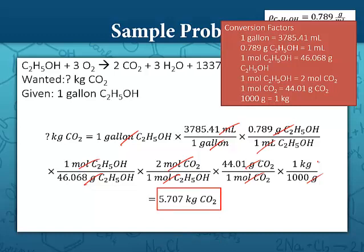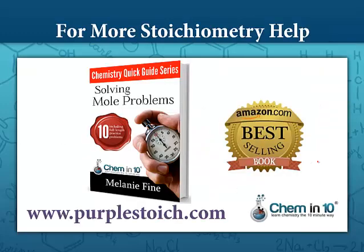I kept the answer in four significant figures because energy was given in four sig figs. There's an argument that the density having three sig figs would give 5.71 kilograms, but I'm keeping it as is. I hope this video was helpful. To get more stoichiometry help, sign up at purplestoik.com and you'll get a free copy of my Amazon bestselling book, Solving Mole Problems.